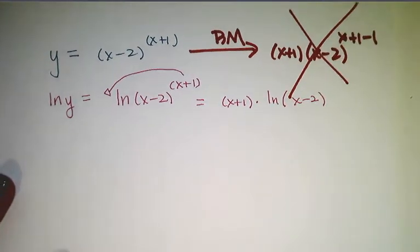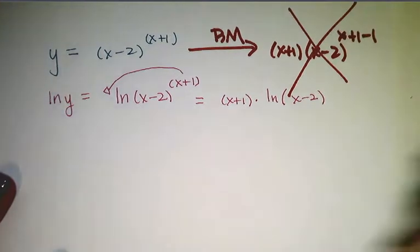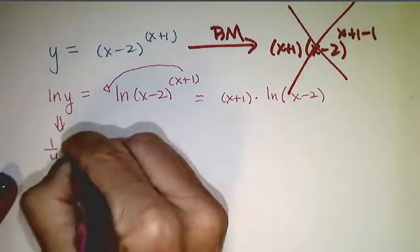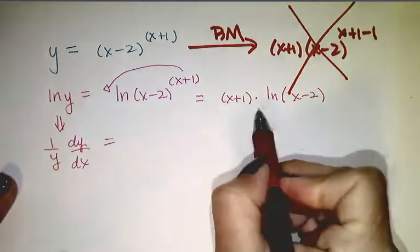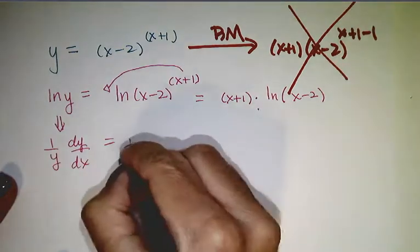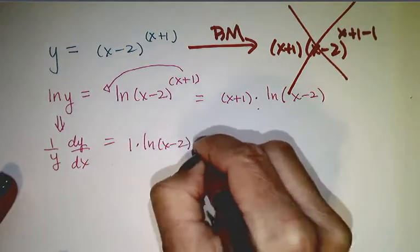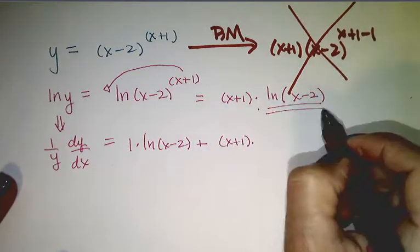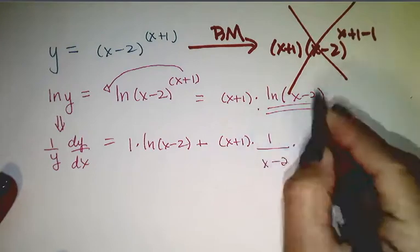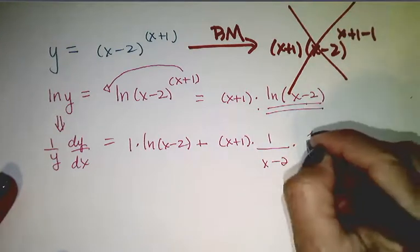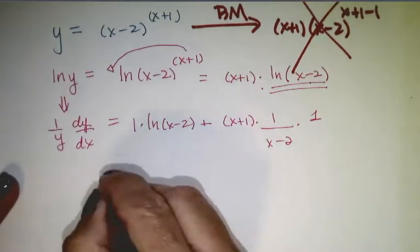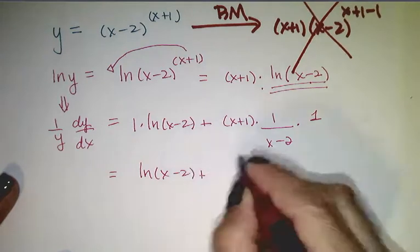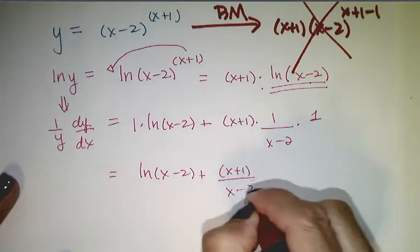Now, just like before, we take the derivative of both sides with respect to x. So 1 over y times dy/dx equals, using the product rule, 1 times ln(x-2) plus (x+1) times 1 over (x-2) times 1. Cleaning this up: 1 over y times dy/dx equals ln(x-2) plus (x+1) over (x-2).